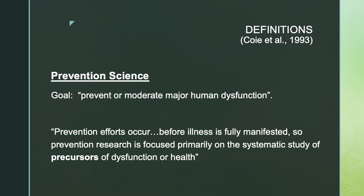Let's talk about some definitions. First of all, they define prevention science as having the goal of preventing or moderating major human dysfunction, stating that prevention efforts occur before illness is fully manifested. Prevention research is therefore focused primarily on the systematic study of the precursors of dysfunction and also the precursors of health or optimal functioning.